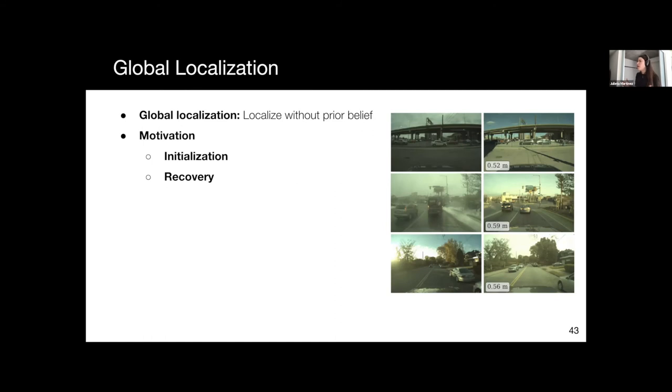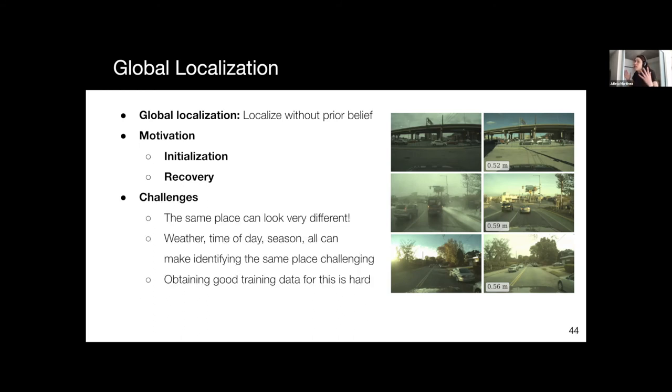All these methods are called global because they have to localize in the whole map. A priori, you don't know where you are, so in principle, you have to search over the entire space. Why is this hard? It basically amounts to recognizing a place that you have seen before, which is something that humans do all the time. The main challenge is that the same place can look very different due to things like weather or time of day or season or dynamic objects. All of these can make identifying the same place very challenging.